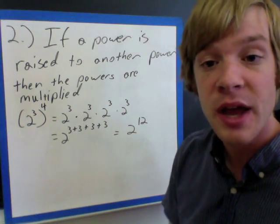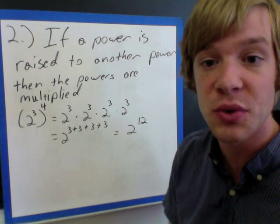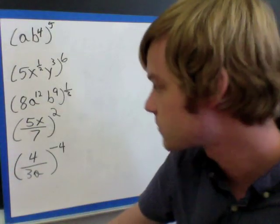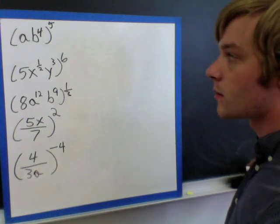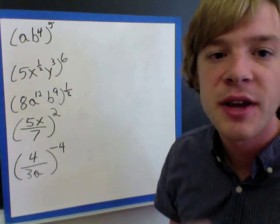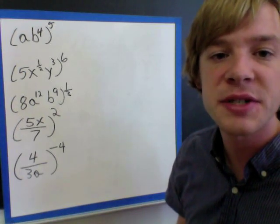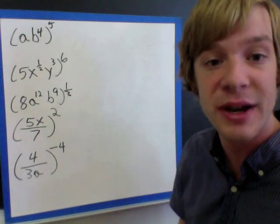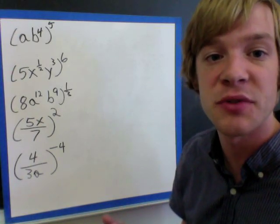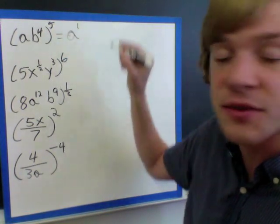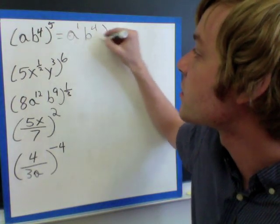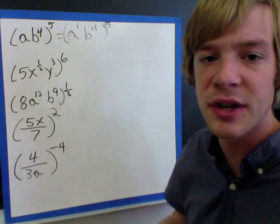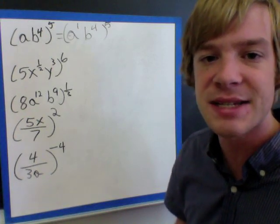So I'm going to go through some example problems, and hopefully these will make sense — we're just following these two rules. My first example here, I have a times b to the 4th, and that's all raised to the power of 5. I know that if I have a base with no exponent shown, that counts as an exponent of 1. So I really have a to the 1st and b to the 4th raised to the power of 5. I'm just showing this step for the first time here.